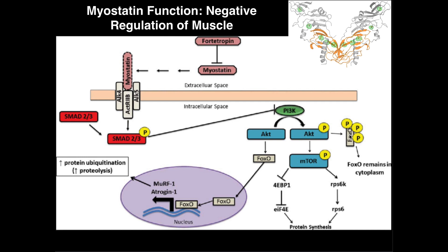It'll turn out later that if FOXO manages to go into the nucleus, it actually promotes more gene expression that results in destruction of proteins, which you wouldn't want if you're trying to get protein synthesis. So by phosphorylating FOXO, it remains in the cytoplasm and prevents it from going into the nucleus. That's the first thing that AKT does when it's activated — it phosphorylates FOXO, preventing it from going into the nucleus and expressing anti-muscle protein synthesis genes. The other thing that AKT does when it's activated — which is probably the more important thing for muscle protein synthesis — is it triggers the activation of mTOR. So in addition to phosphorylating FOXO, it'll phosphorylate mTOR, which activates mTOR.